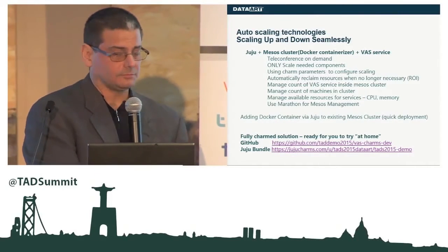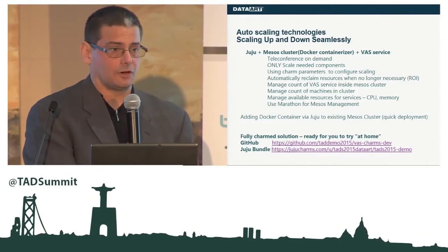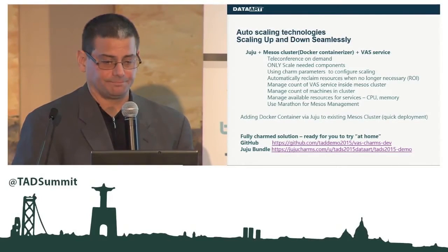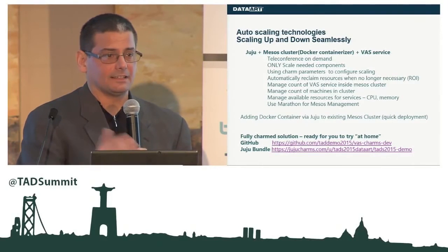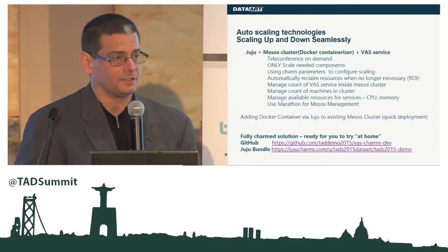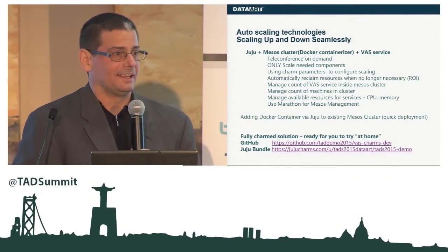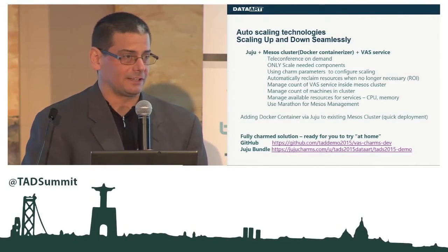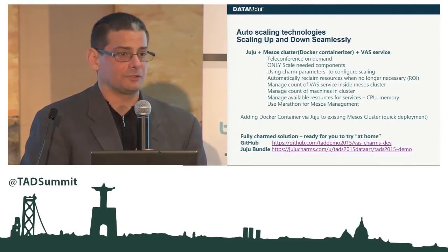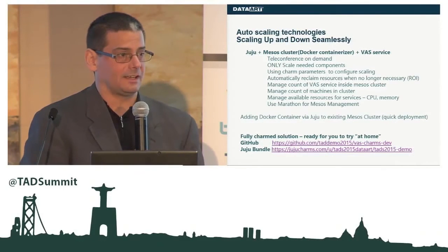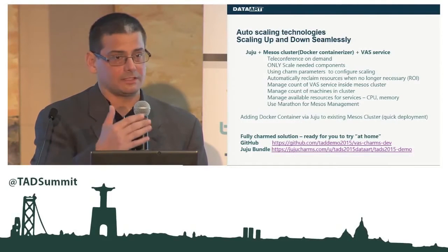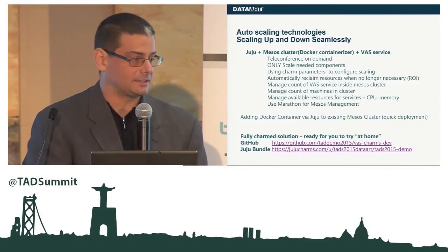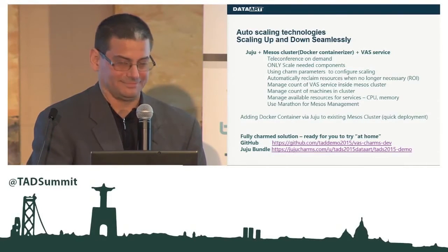Here are the links for both GitHub and the charm store — we encourage people to take it and play with it. A key thing about scaling up: there are a lot of technologies to do that, but scaling down is just as important. If you leave 50, 500, or 5,000 extra virtual machines running in the cloud, you're paying for it. Part of the demonstration is that when we stop the load testing and remove the extra service, the entire environment will scale down automatically — both inside the Mesos cluster and inside the Docker container.